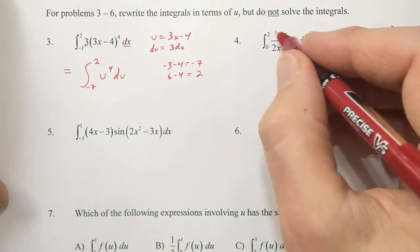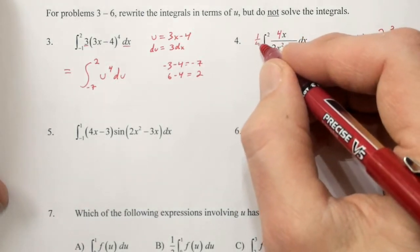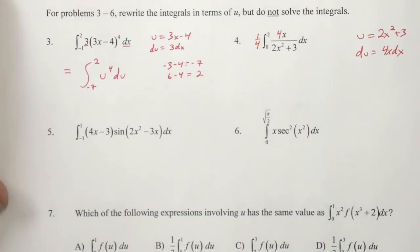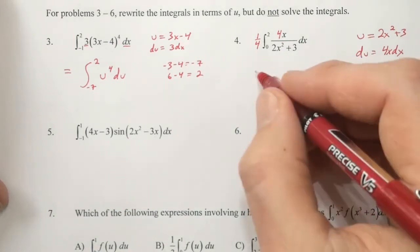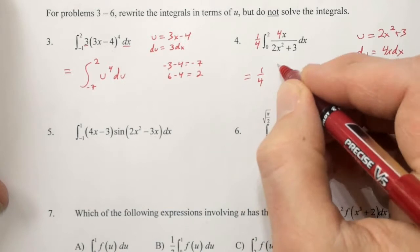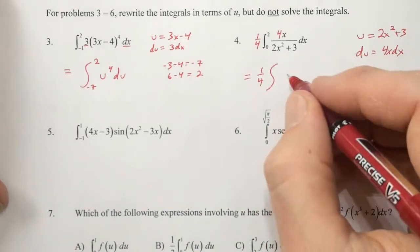We have the x and the dx, we don't have the 4. So just like with problem number 2, we need the quarter. So what we're looking at here is 1/4 the integral.